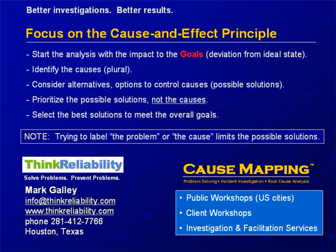When you get to the solution step, you can consider alternatives — these are the options or ideas, the possible solutions, the different ways you could solve the problem. Then you prioritize the different ways you could solve the problem to pick the best ones. An error that we see in organizations frequently is they try to prioritize the causes — they try to find the important causes and then ignore the not-so-important causes. But by definition, anything that is causally related is required to produce the incident, meaning there aren't more important causes and less important causes.